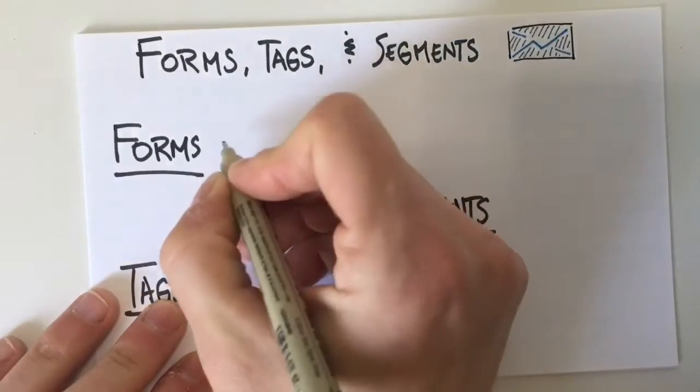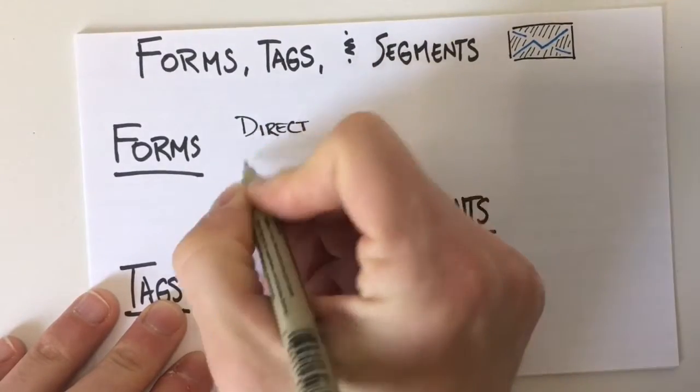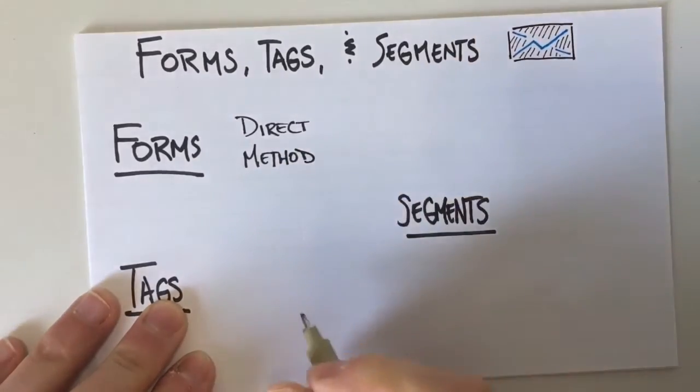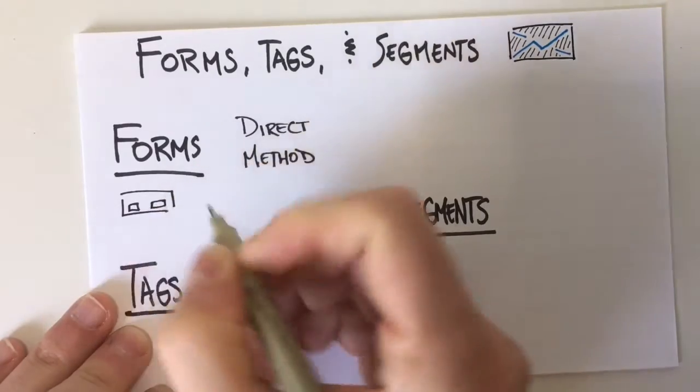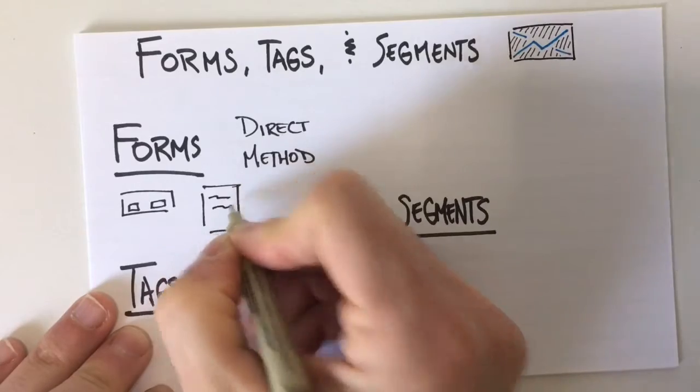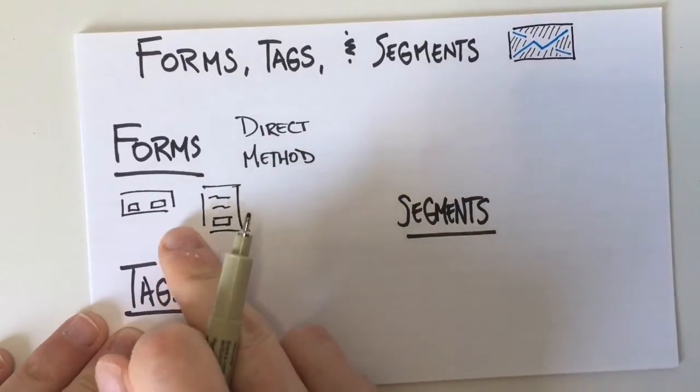So for me, I like to think of forms as direct methods that people are coming in to your subscriber list. Think of it in terms of like they are taking a very direct action of signing up through a form or from a landing page. They're taking that very specific direct action. They know that they are opting in.